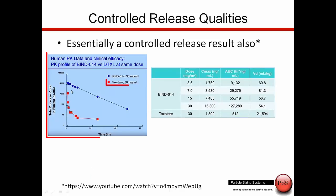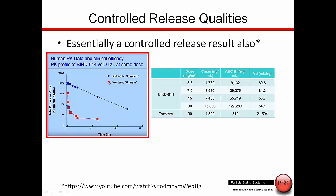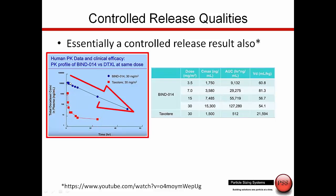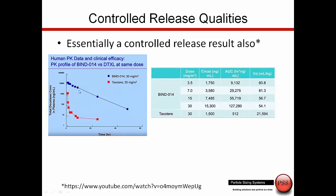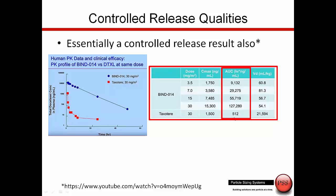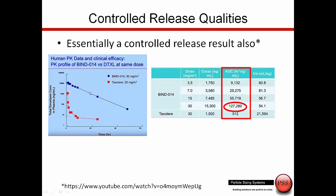The actual drug in BIND-014 is Taxotere. This is looking at the pharmacokinetic data for administering this drug to a patient — just the drug itself versus the nanoparticle formulation, both at the same dose of 30 milligrams. Looking at concentration in plasma as a function of time, the drug itself drops off to zero very quickly. But when encapsulated inside a polyethylene glycol nanoparticle, there's a great extension of the useful concentration in the blood — something like a 250-fold increase in the AUC: 512 versus 127,000.